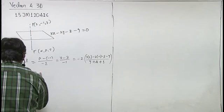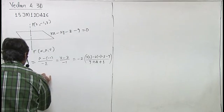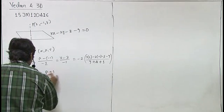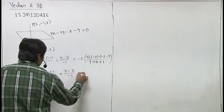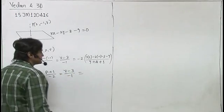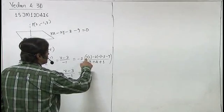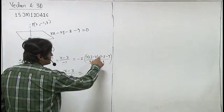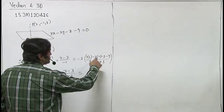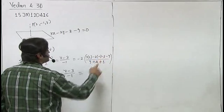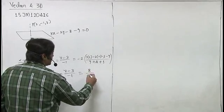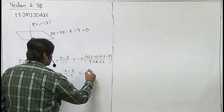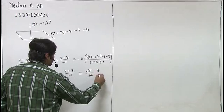So from here we get alpha minus 2 upon 3, beta plus 1 upon minus 2, gamma minus 3 upon minus 1 equals to... here we get 6 plus 2, that's 8, and here minus 12, so minus 4 into minus 2, that is 8. That is 8 and here we get 14, that is 4 by 7.